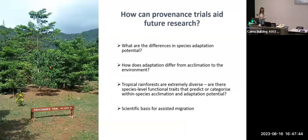To conclude: provenance trials can aid future research in rainforest restoration in a warming world. Growing species with different genetic material at particular sites allows us to look at differences in species adaptation potential, adaptation capacities, and the relative role of acclimation. Tropical rainforests are extremely diverse and we can't do these experiments on every species, so we need to identify traits to predict or categorize within-species acclimation potential. These experiments help us provide the scientific basis for assisted migration, which can help in the future.